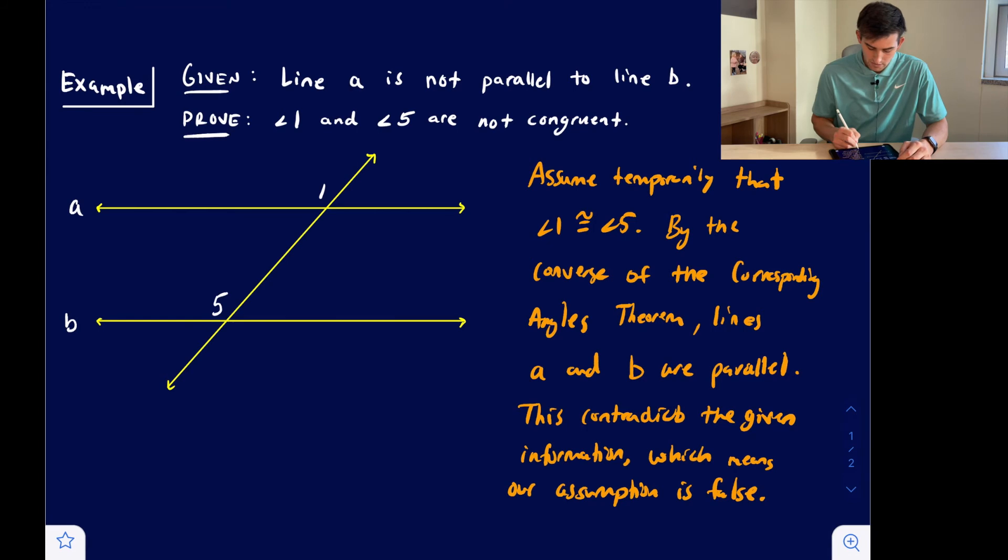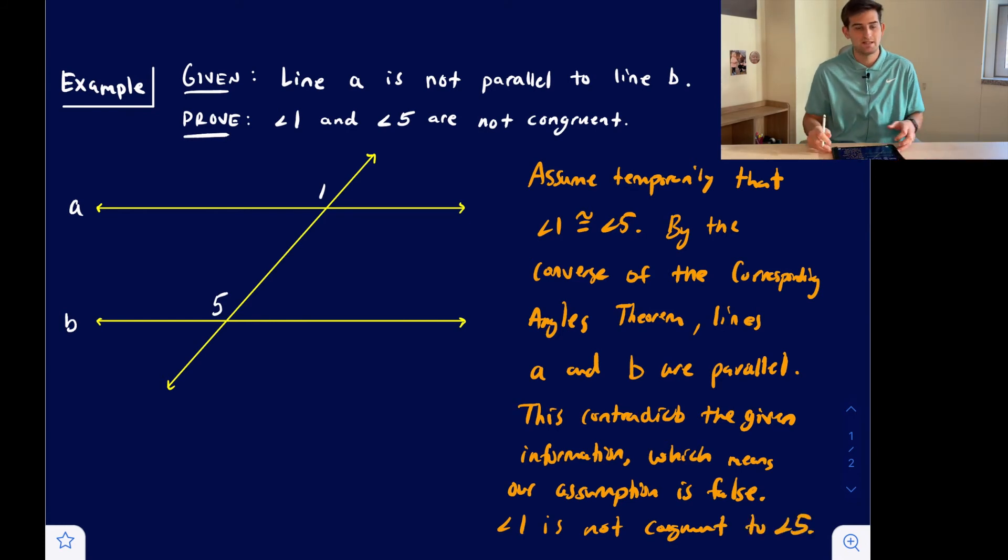So therefore, angle 1 is not congruent to angle 5. Okay, and that's how you write an indirect proof.